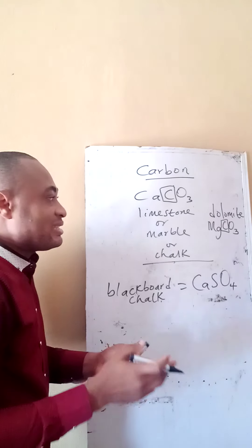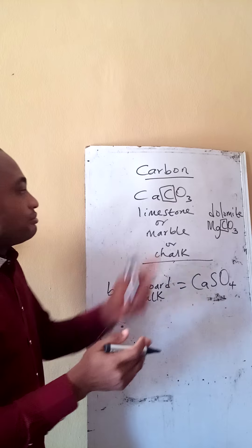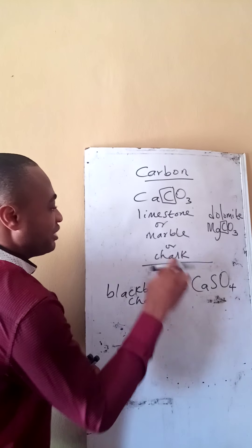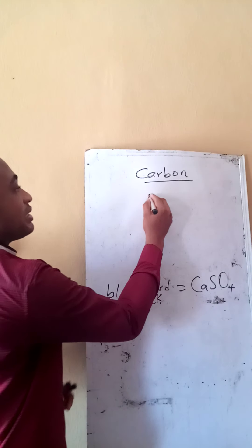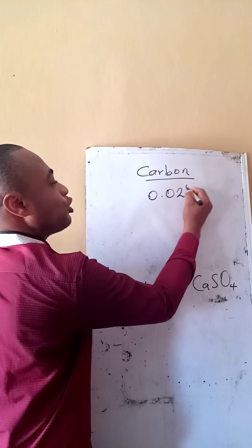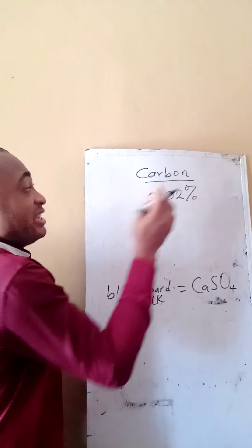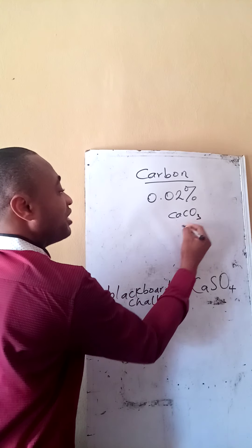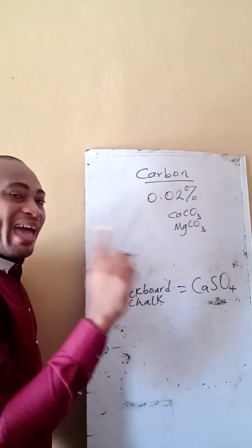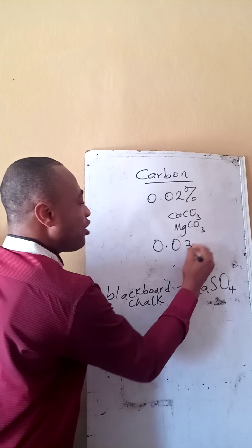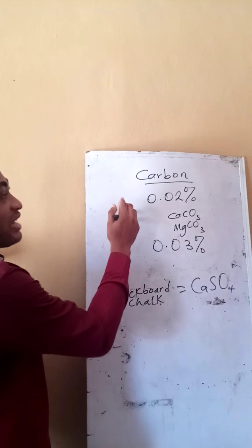Carbon can exist as an element in elemental form in nature or in combination with compounds such as some of these that I have mentioned. In nature, in the earth's crust, carbon consists of about 0.02 percent of the total carbon in the earth's crust in the form of your calcium carbonate, your magnesium carbonate and other trioxocarbonates. But in the air, carbon is made up of 0.03 percent of the total constituents of air.